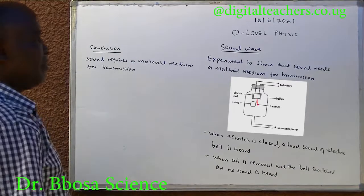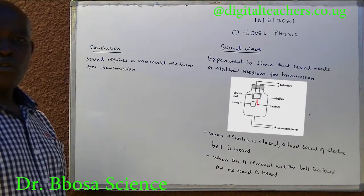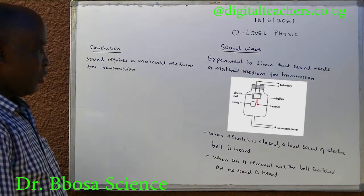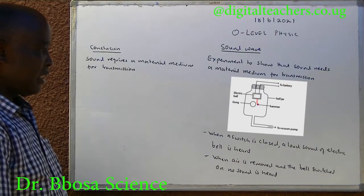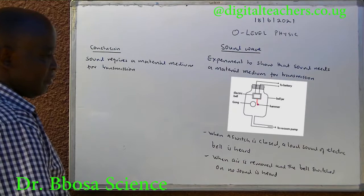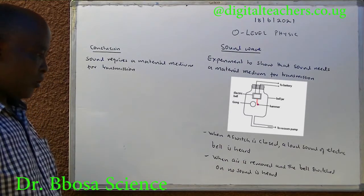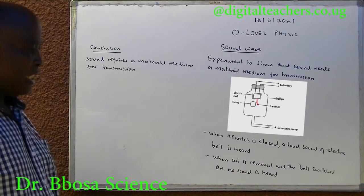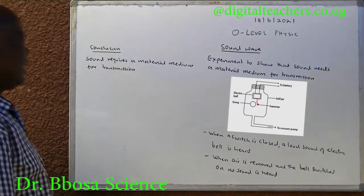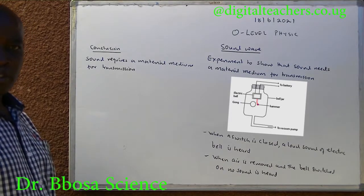An experiment to show that sound needs a material medium for transmission. The setup is as shown. When a switch is closed, a loud sound of an electric bell is heard. When air is removed and the bell is switched on, no sound is heard. Conclusion: sound requires a material medium for transmission.